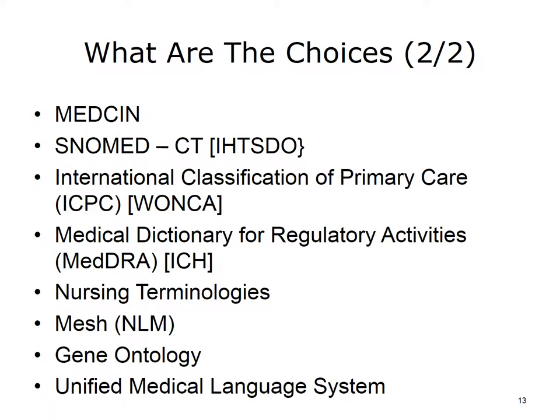The list continues: SNOMED CT, IHT SDO; International Classification for Primary Care (ICPC), WONCA; Medical Dictionary for Regulatory Activities (MedDRA), ICH; Nursing Terminologies; MeSH, NLM; Gene Ontology (GO); and Unified Medical Language System (UMLS). Other sources of terminology include HL7 Tables and the United States Health Information Knowledge Base (USHIK), funded and directed by the Agency for Healthcare Research and Quality (AHRQ), with management support in partnership with the Centers for Medicare and Medicaid Services.